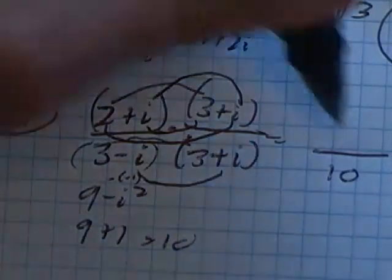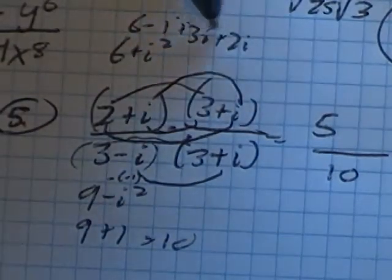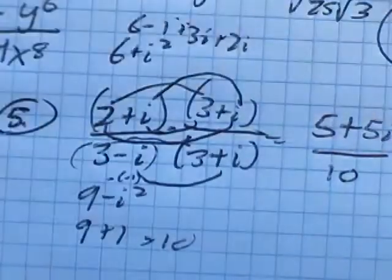In the middle, I have three i and two i. So this is going to be six minus one, which is five, plus three i plus two i, which is five i.